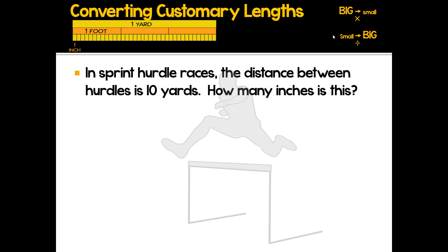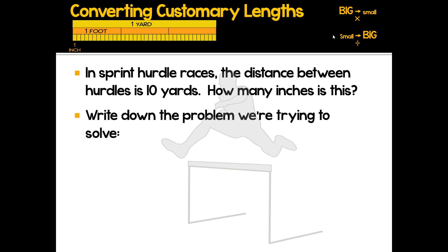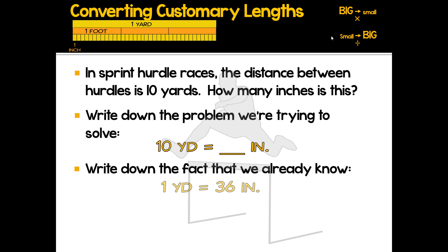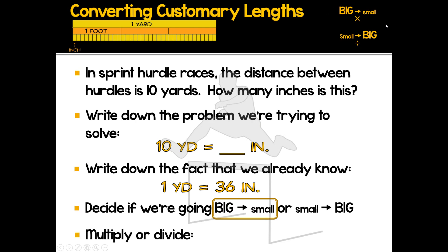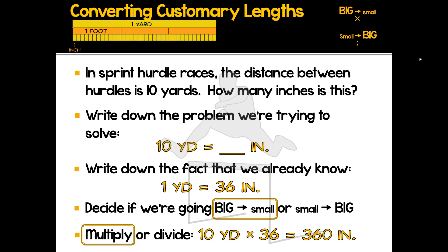How about sprinting — track and field? The distance between the hurdles is 10 yards — how many inches is that? We're trying to solve: 10 yards equals how many inches. We know one yard is 36 inches — that's 12 inches for each of the three feet. Going from big yards to very tiny small inches means big to small, so we multiply. Ten times 36 equals 360 inches between each hurdle.